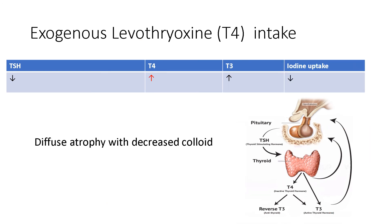Finally, exogenous levothyroxine intake — levothyroxine is T4. If someone is taking a lot of T4, it feeds back on the pituitary and inhibits TSH, so TSH is low. With a lot of T4, it gets converted into a lot of T3 and a lot of reverse T3. However, because TSH is low, the thyroid will not be taking up iodine. And because TSH is low, this person's thyroid will actually be atrophic.